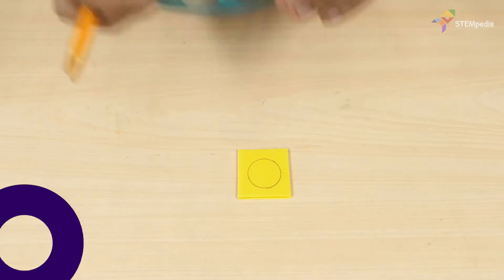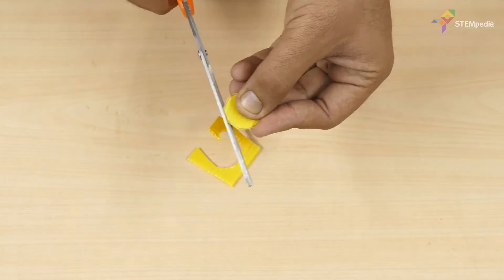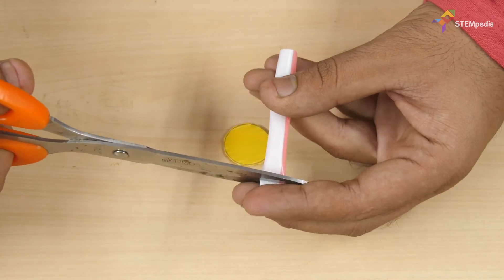Now let's make the handle for opening the door. Draw a small circle on a piece of corrugated sheet and cut it out. Then take a straw and cut a piece of 1cm.